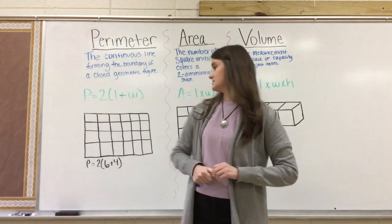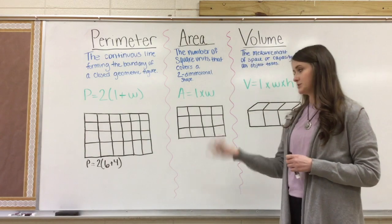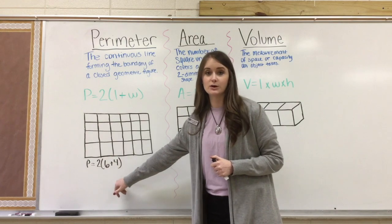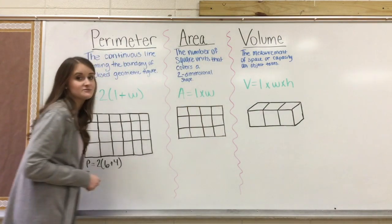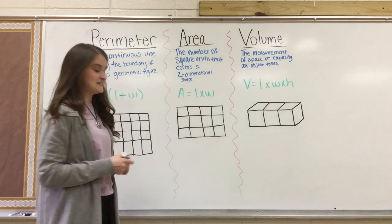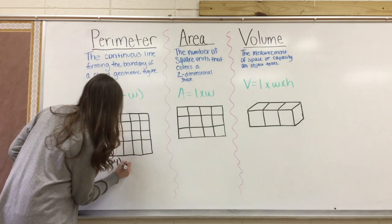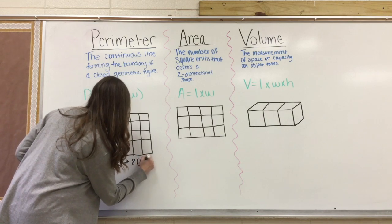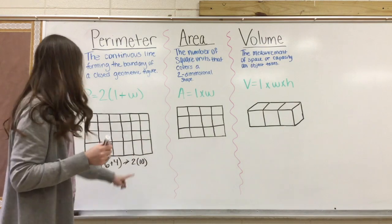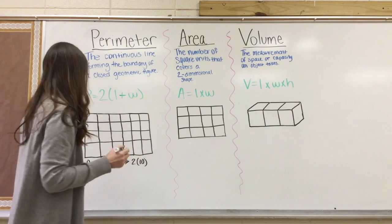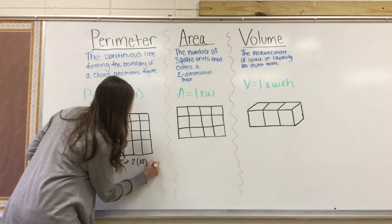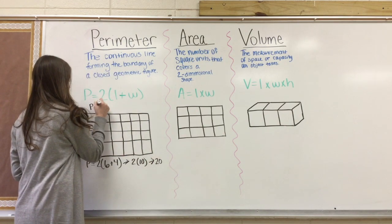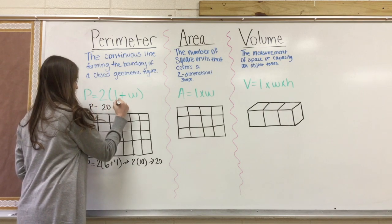Okay, so now we have 2 times 6 plus 4. If we think to our PEMDAS list and the order of the operations, we would need to do what's in the parentheses first, which is 6 plus 4. So can someone tell me what 6 plus 4 is? That's right, it's 10. So now we have 2 times what's in the parentheses, which is 10. So it's 2 times 10, and 2 times 10 is 20. So we will write P equals 20 units.